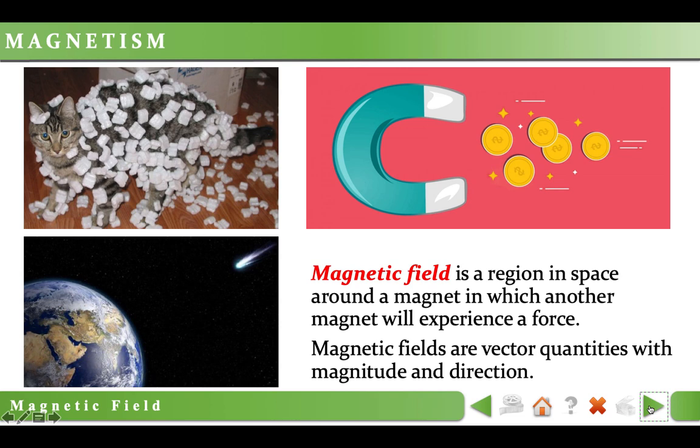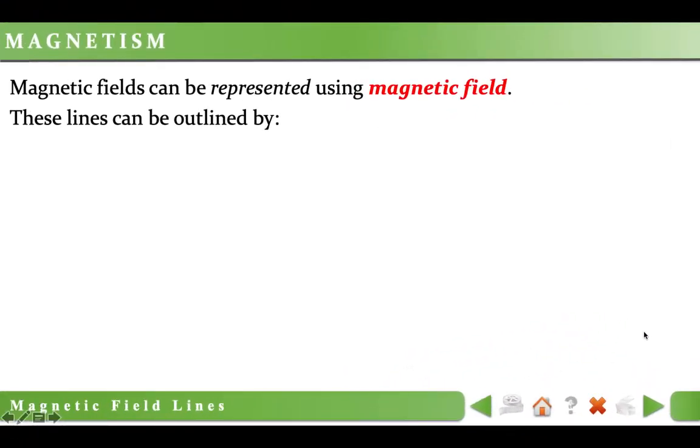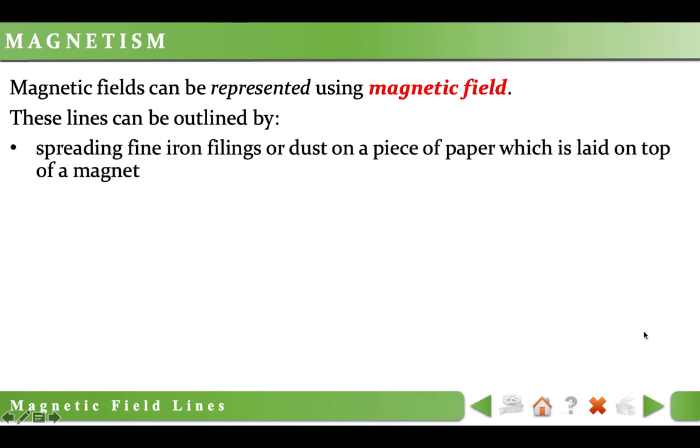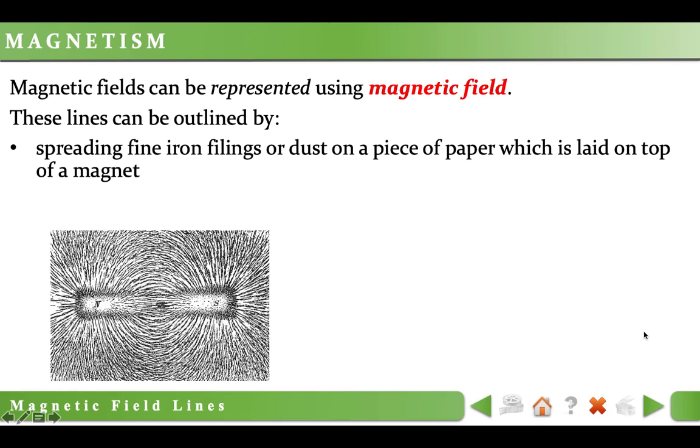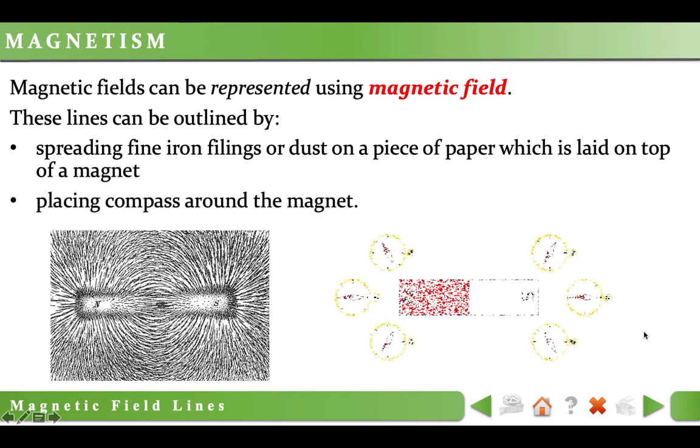Magnetic fields are vector quantities, with magnitude and direction. We use magnetic field lines to show the strength and direction of magnetic field. One method to observe these lines is spreading fine iron filings on a piece of paper laid on top of a magnet. Another method is placing compasses around the magnet. Compass needles will point in the direction of local magnetic field, towards a magnet's south pole and away from its north pole.